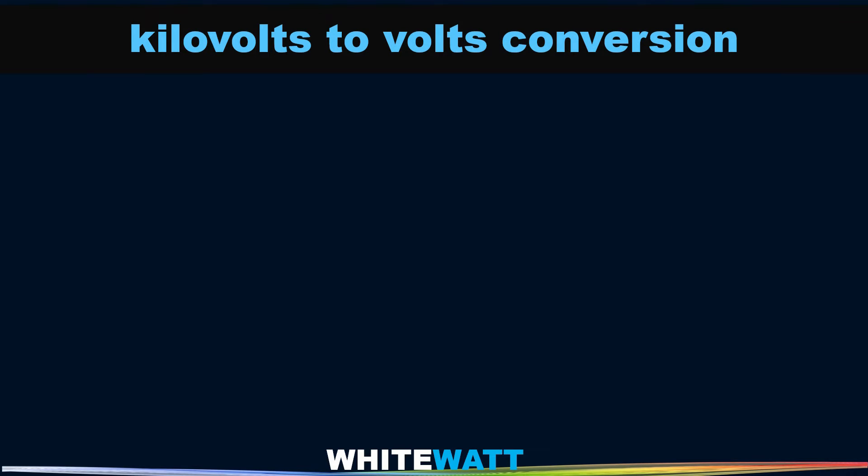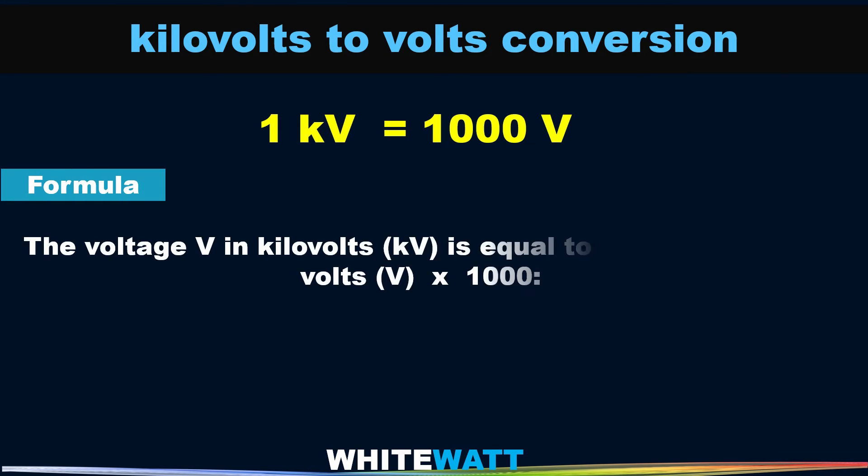Number two: kilovolt into volts conversion. We know that 1 kilovolt is equal to 1000 volts. So the formula is the voltage V in kilovolt is equal to the voltage V in volts multiplied by 1000.